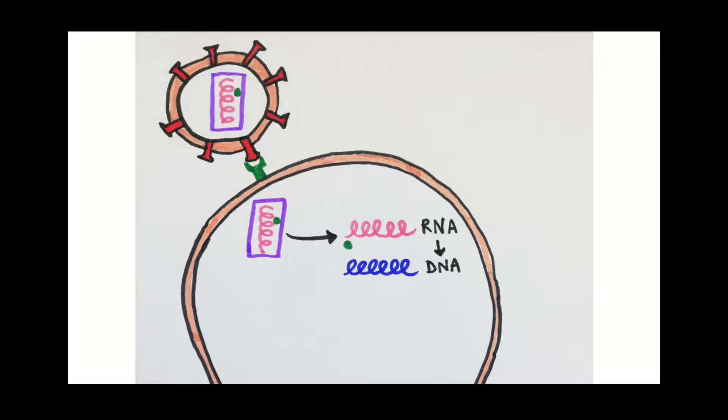The capsid breaks down so that the viral RNA is now in the cytoplasm. Here the reverse transcriptase enzyme gets to work using the RNA as a template to make a strand of DNA. This is the reverse process of what happens in transcription in eukaryotic cells where DNA is used as a template to make RNA.